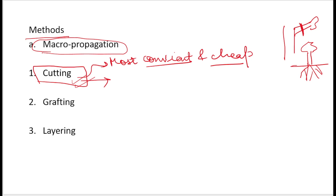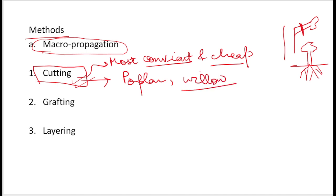This is simple stem cutting — we cut the stem, encourage it to develop roots. This is also applicable in forest trees. We can do the same in popular trees like the ones we discussed.